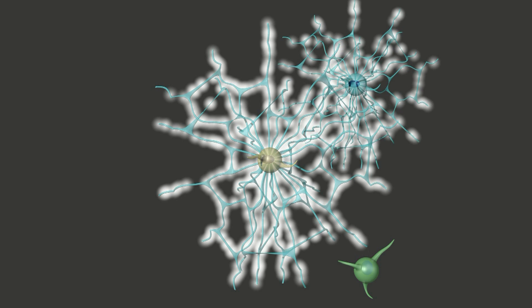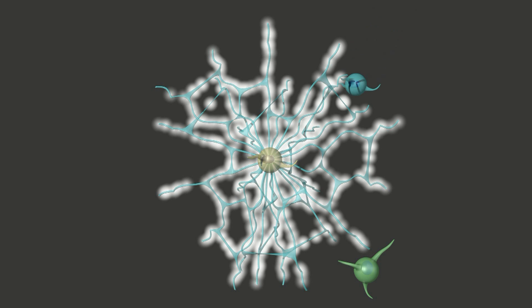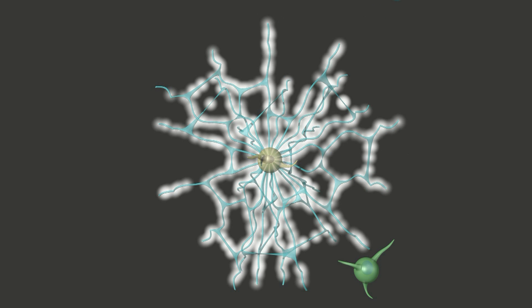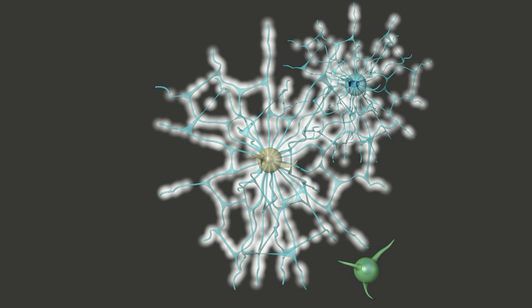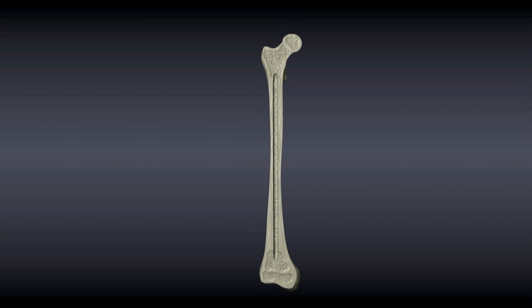Quick review: bone tissue is formed by a collagen matrix hardened by deposited calcium. The bone tissue is built up by osteoblasts, maintained by osteocytes, and broken down by osteoclasts. The outer shell of a bone is made up of dense, highly organized cortical bone tissue, making it rigid and strong. The inner part is generally made up of spongy cancellous bone, which contributes to the strength of the bone while providing a place for the storage of bone marrow.